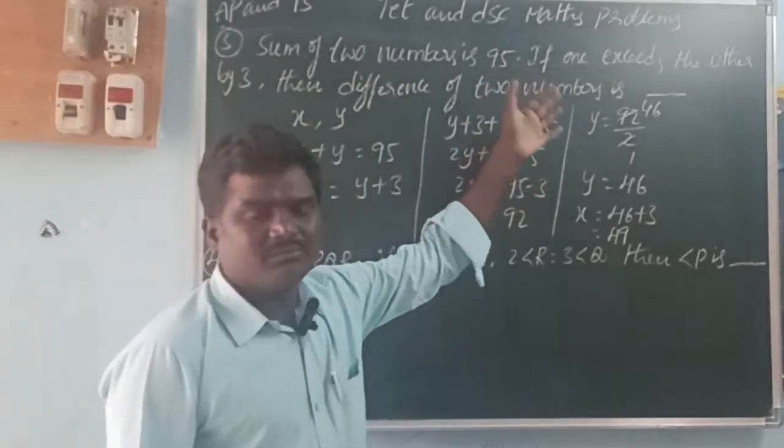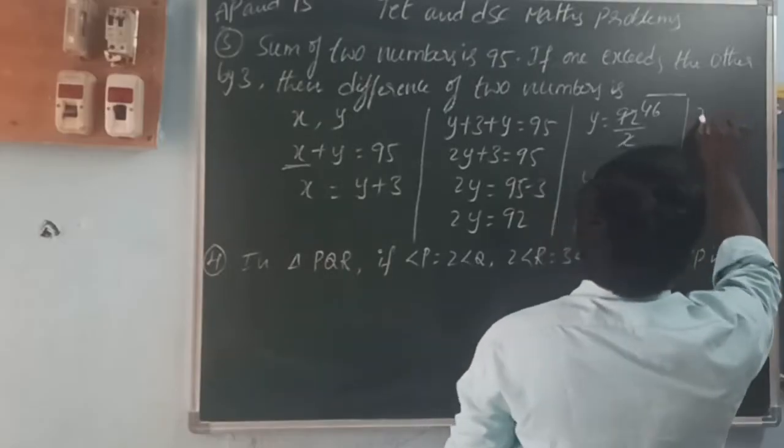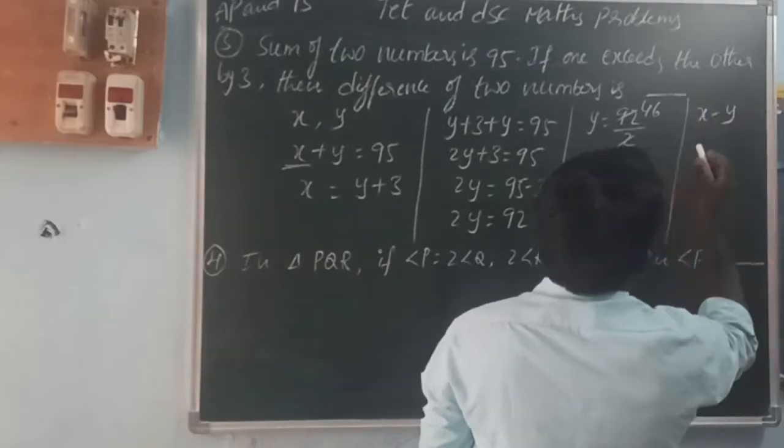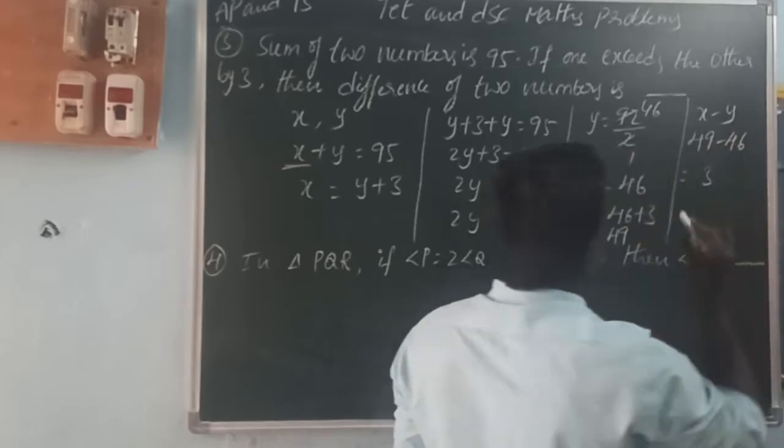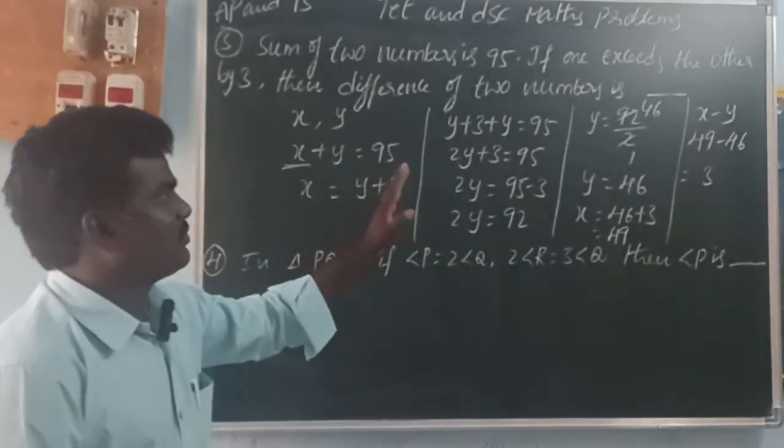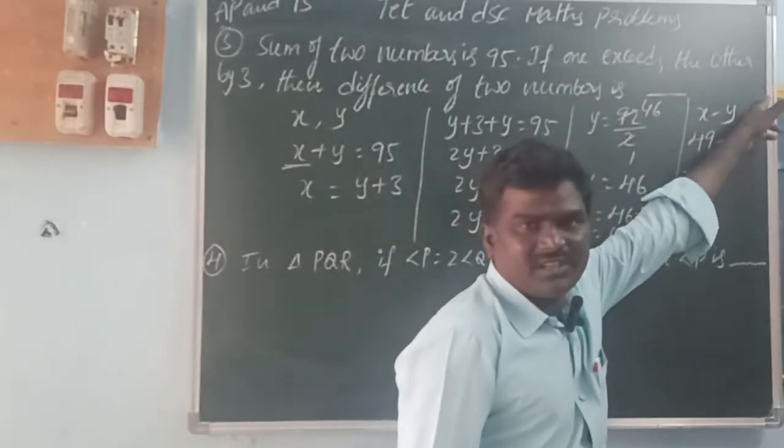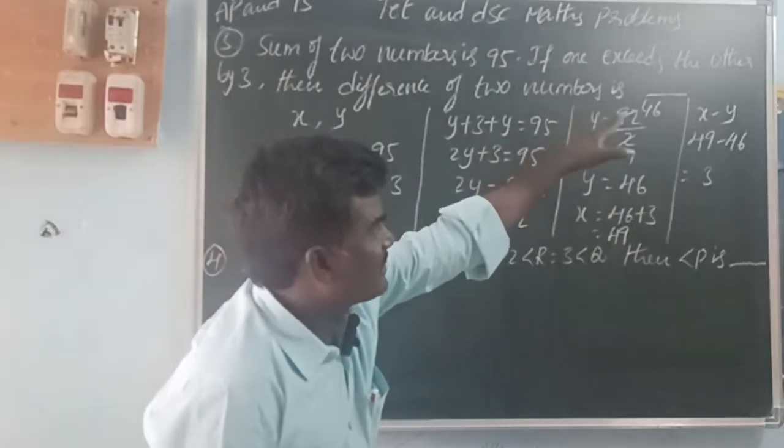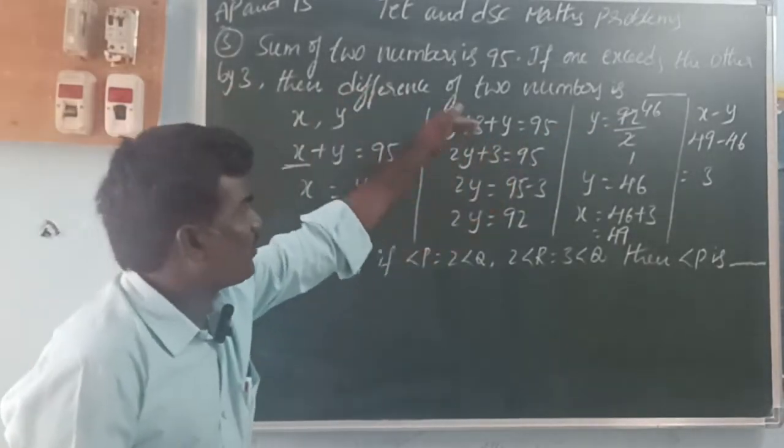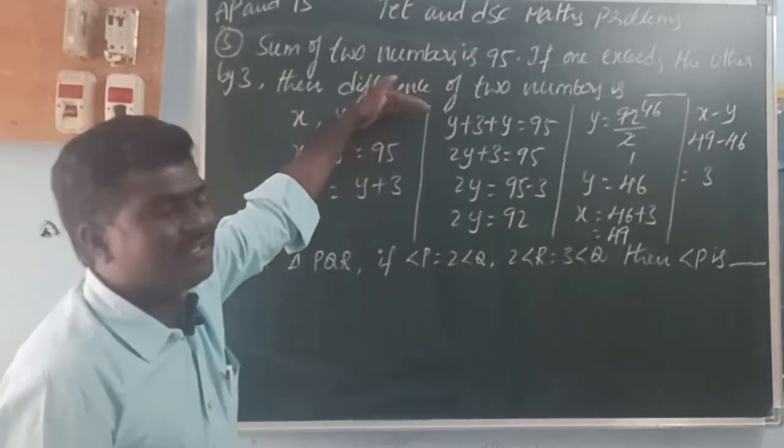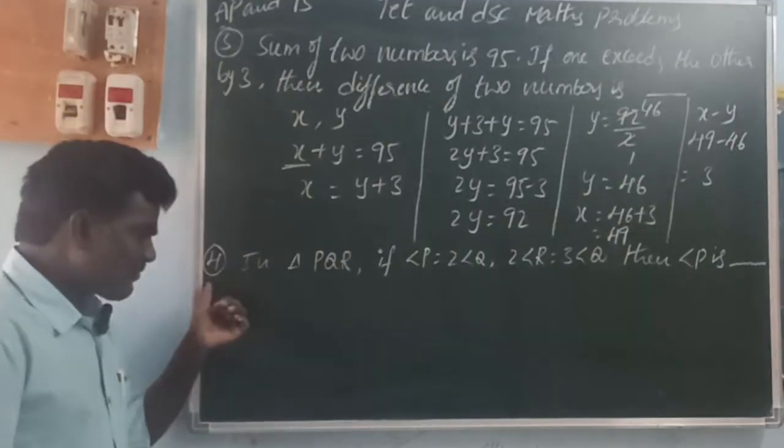The difference of two numbers: difference means minus. So x minus y equals 49 minus 46, which equals 3. So if one number exceeds the other by 3, then the difference of the two numbers is 3.